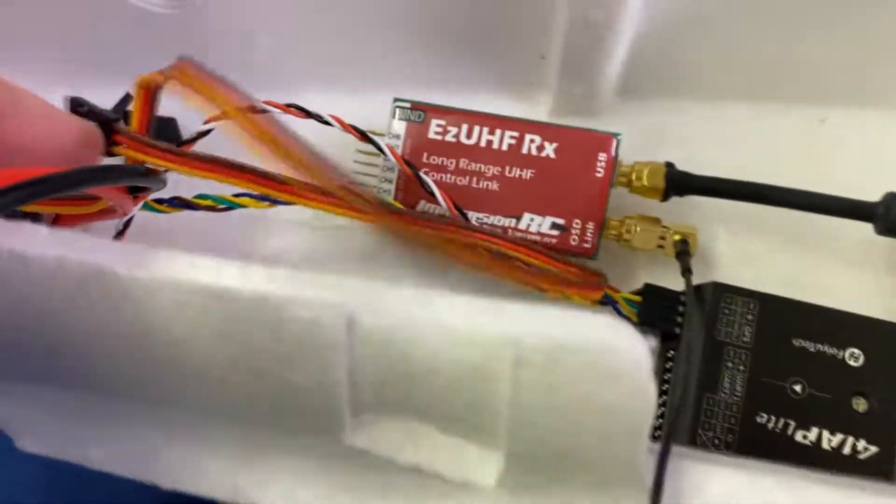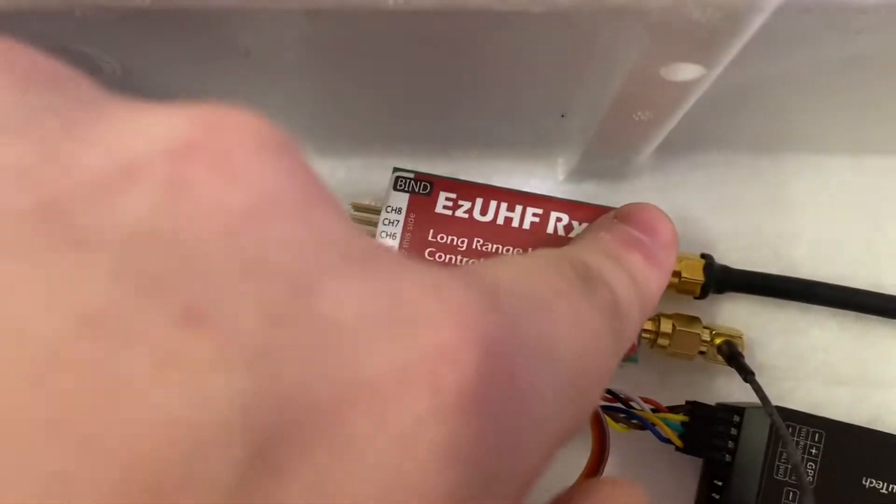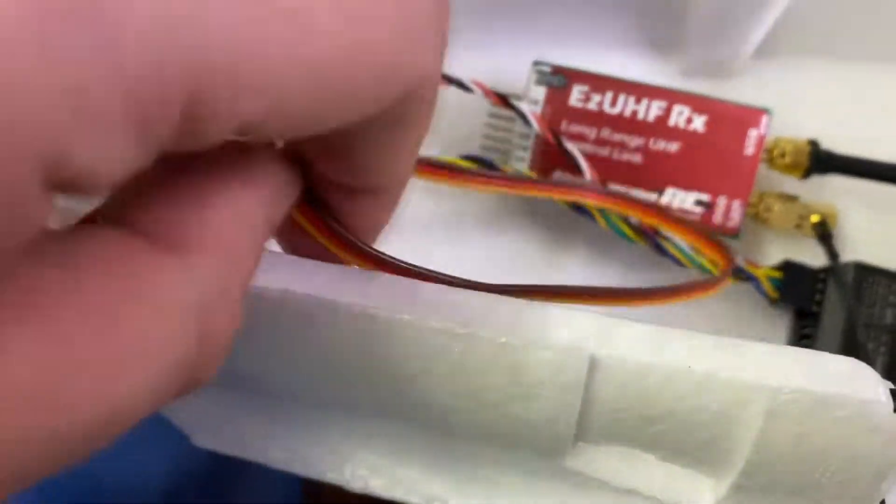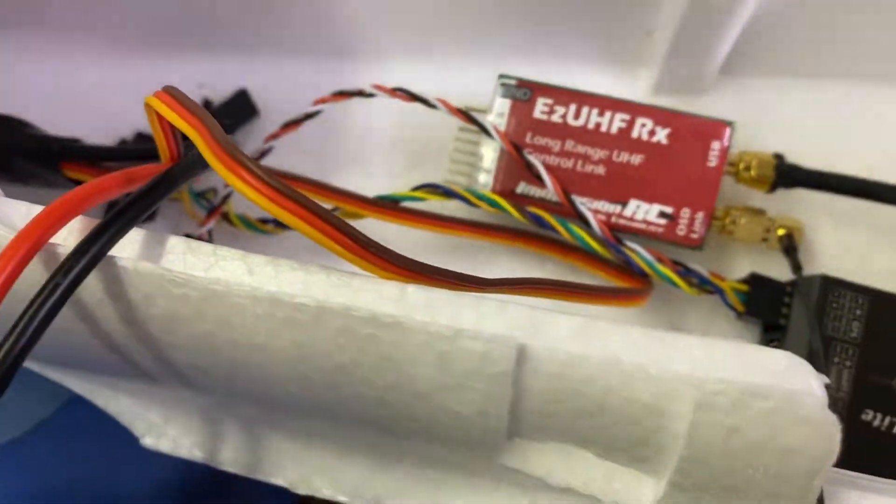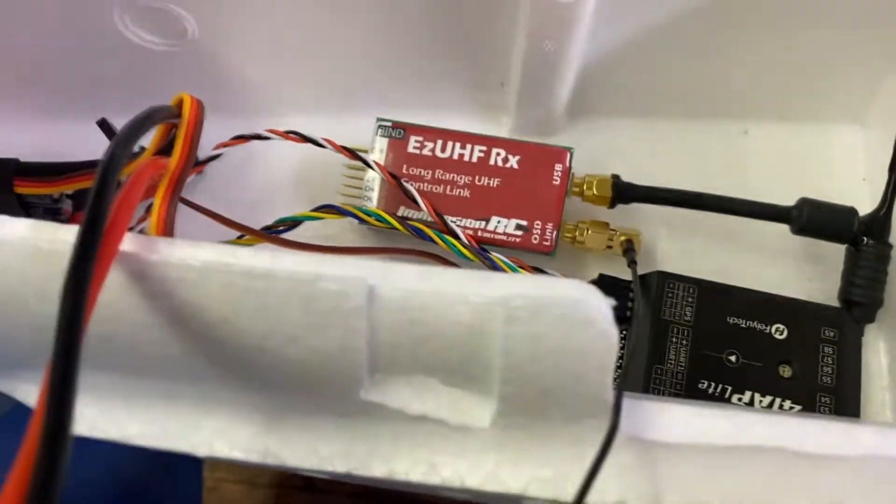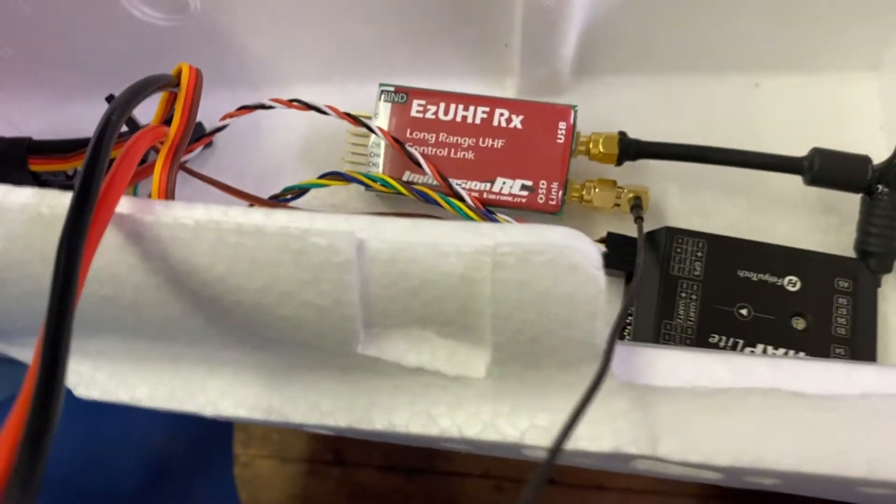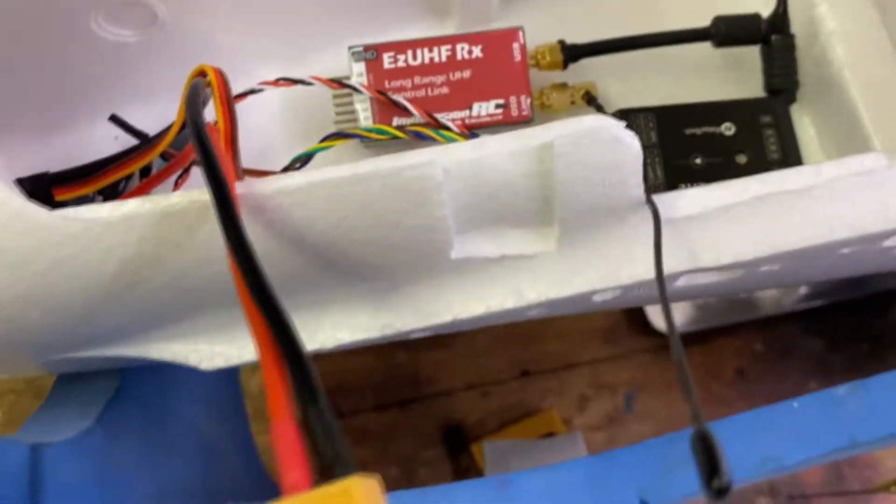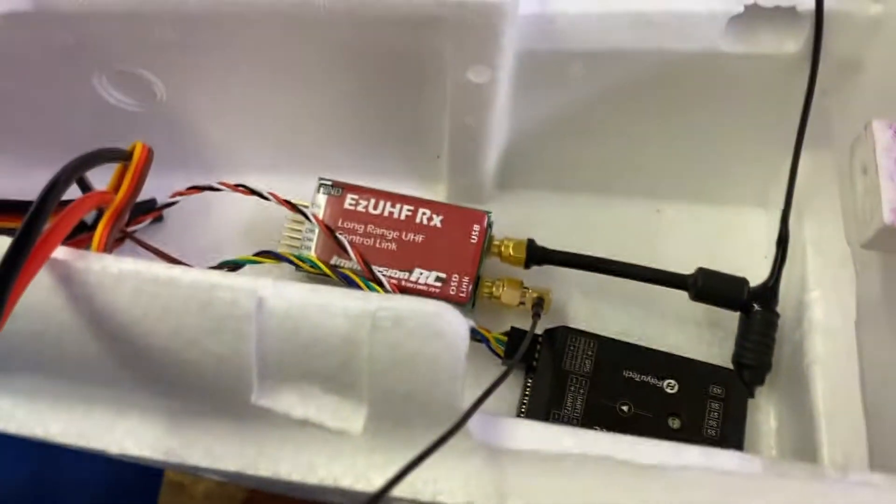And those cables will run into the receiver here. Throttle can go straight into the receiver. Current sensor can go in here somewhere. It's all going to be neat and excellent. Excellent, everybody.